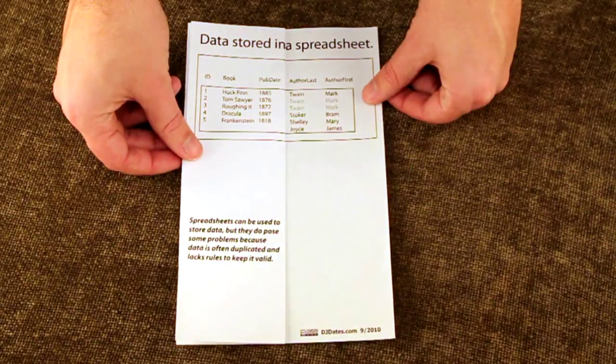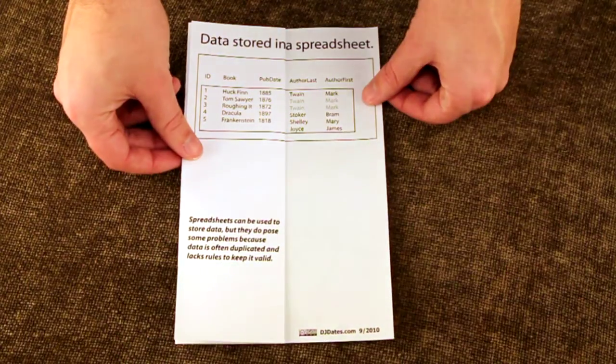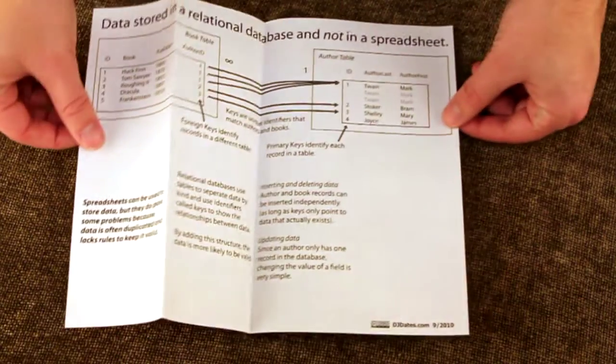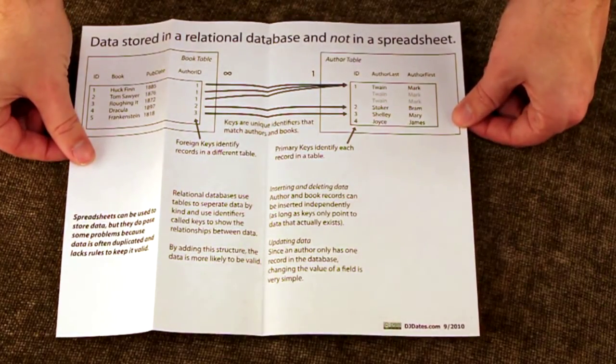The first pamphlet shows a potential data anomaly that was possible when using a spreadsheet as a database. While we can easily store books with a single author in a spreadsheet, how do we store more than one author per book? This pamphlet shows how a relational database would use a one-to-many relationship to resolve this potential anomaly.